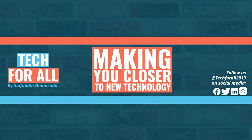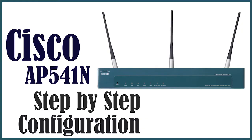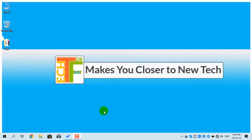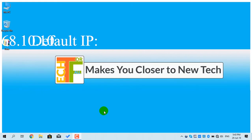Hey guys, this is Saeed Vudeen Ghani Jada. Welcome to my YouTube channel. In this video I will show you how you can configure a Cisco access point model 541. The default IP for this access point is 192.168.10.10.